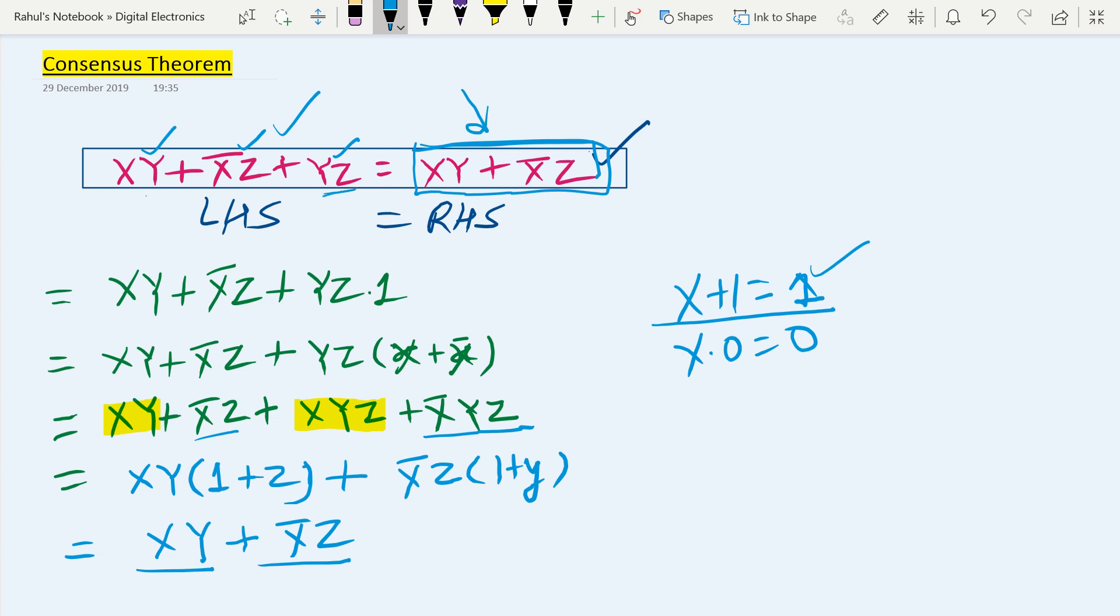When xy is there and x bar z, basically y and z you can say is redundant. Why is it redundant? Because it is independent of any variable - there's no use of y and z here. So you can say it is a redundant part, you can remove or ignore that. But here it is a proof that yz is redundant.